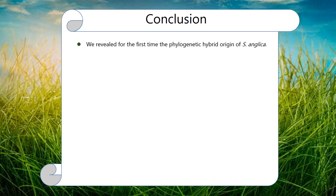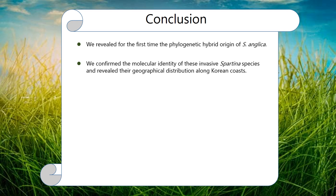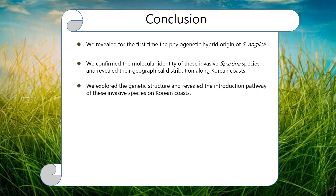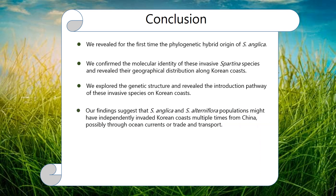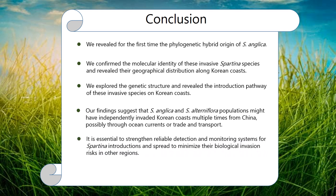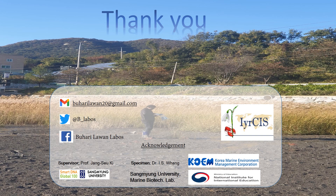In conclusion, we revealed for the first time the phylogenetic hybrid origin of S. angelica. We confirmed the molecular identity of the invasive Spartina species and revealed their geographical distribution. We explored the genetic structure and revealed the introduction pathway of these invasive species on the Korean coast. Our findings suggest that S. angelica and S. alterniflora populations might have independently invaded the Korean coast multiple times from China, possibly through ocean currents or trade and transport. Therefore, it is essential to strengthen reliable detection and monitoring systems for Spartina introductions and spread to minimize biological invasion risks in other regions. Thank you very much — if you have any questions, you can reach me at the address below.